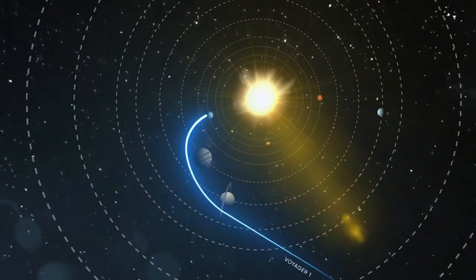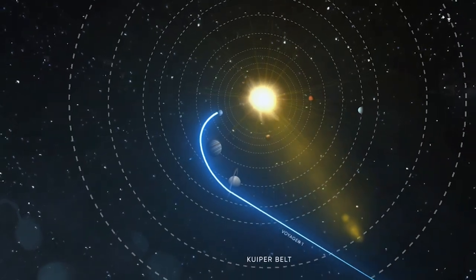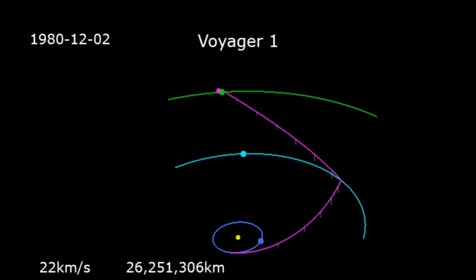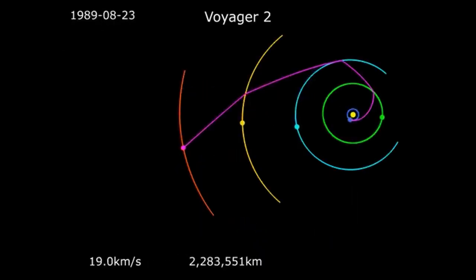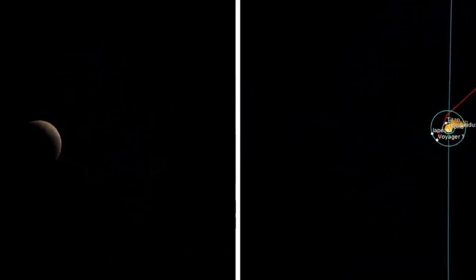these spacecraft provided humanity with the first close-up images of these distant worlds and their moons. However, their journey didn't end there. After their planetary flybys, Voyager 1 and Voyager 2 embarked on a journey into the unknown, pushing the boundaries of our solar system.